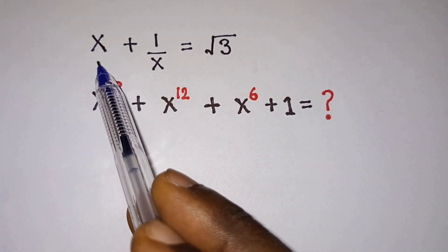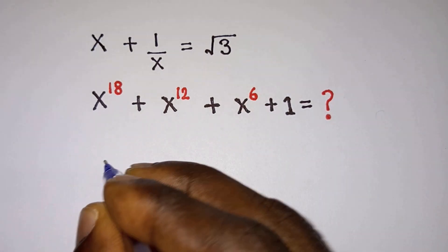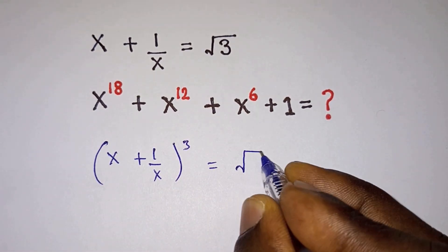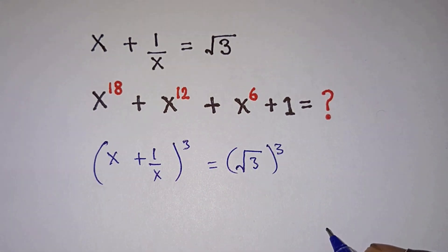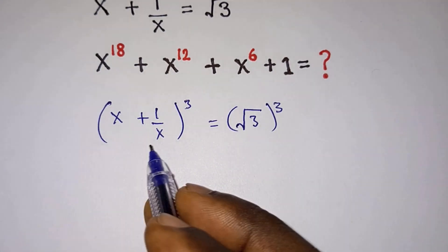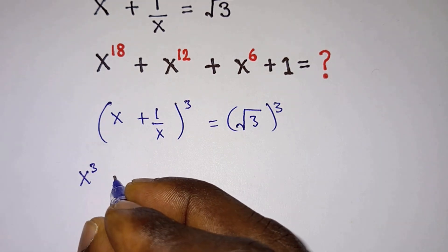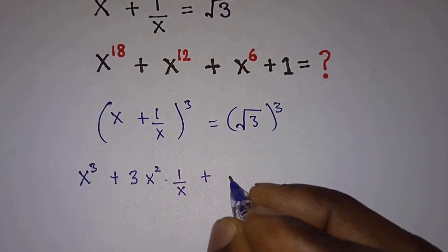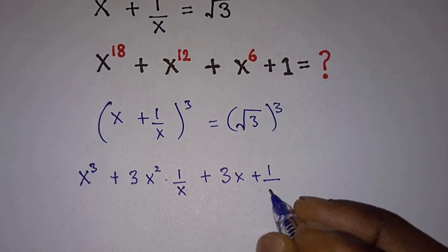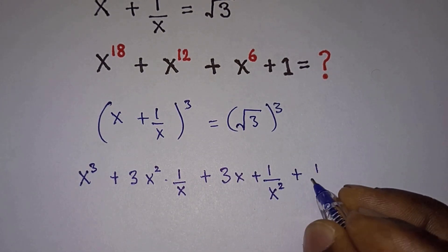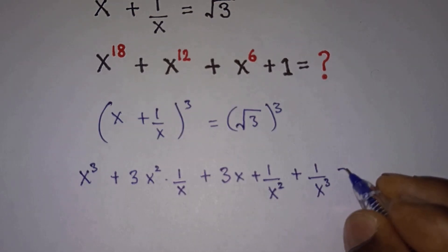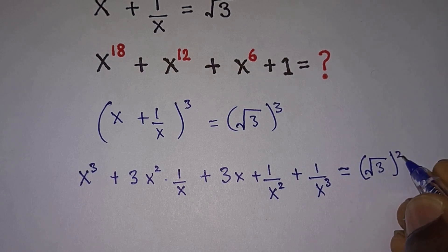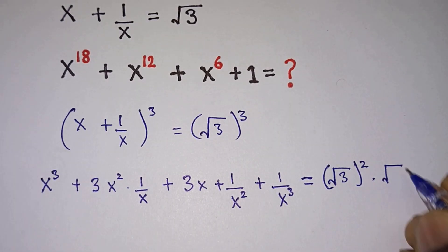First of all, let's raise each side of this first equation to the third power. So we're going to have x plus 1 over x, all to the third power, is equal to square root of 3, all to the third power. Then let's use Pascal's triangle to expand this. We're going to have x to the third power plus 3 times x squared times 1 over x, plus 3 times x times 1 over x squared, plus 1 over x to the third power. This is equal to square root of 3 to the third power, which is the same as square root of 3 squared times square root of 3.